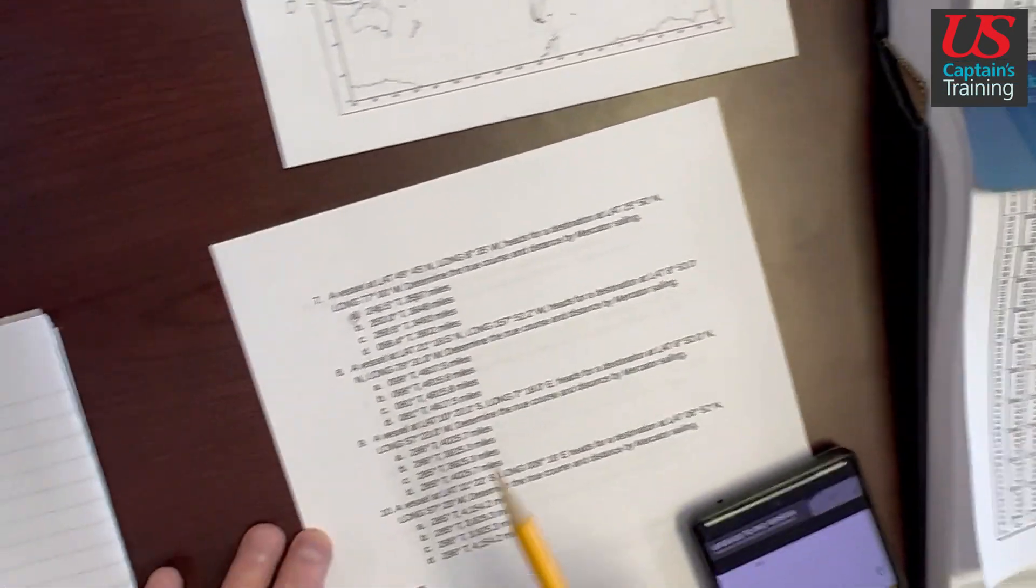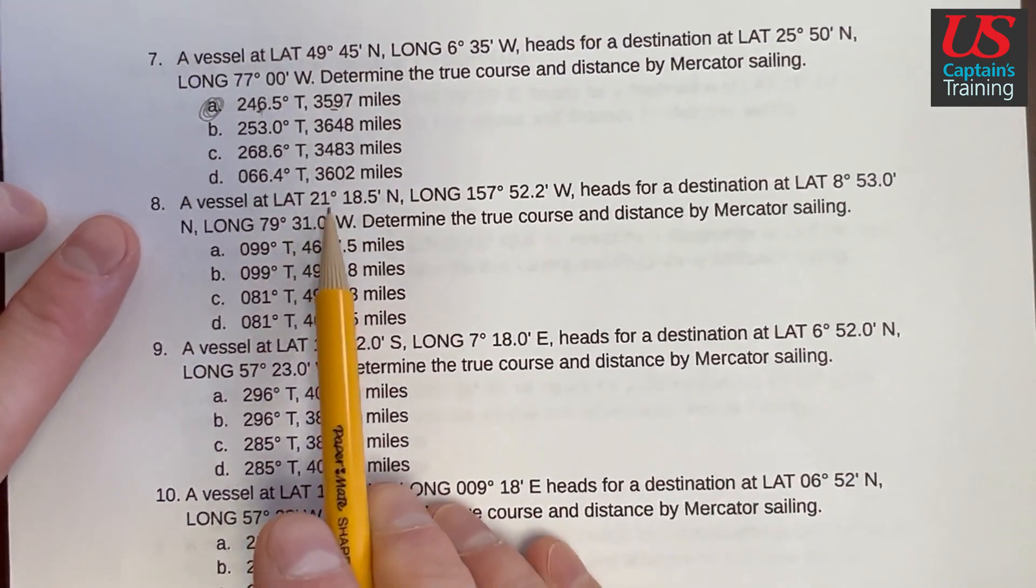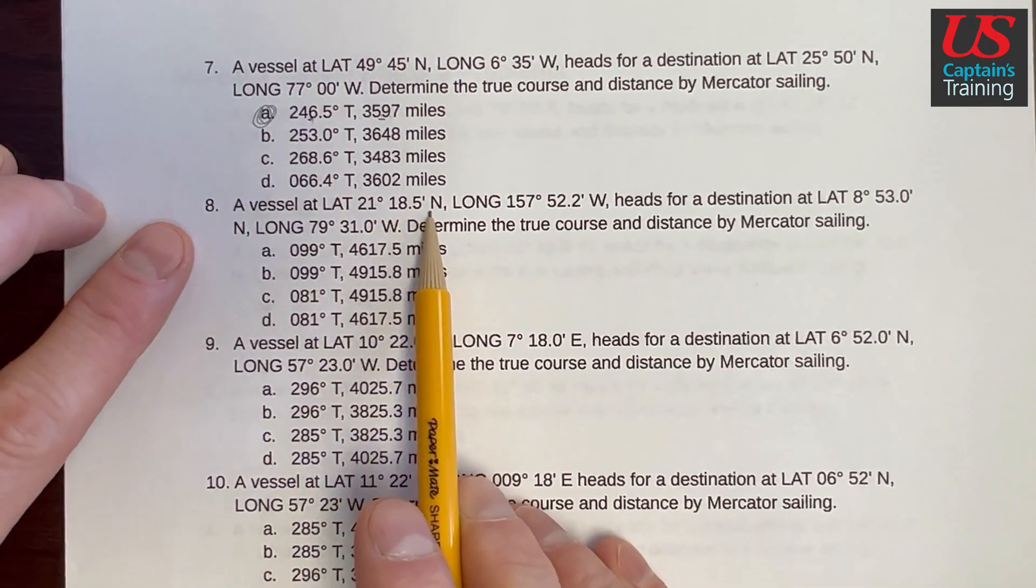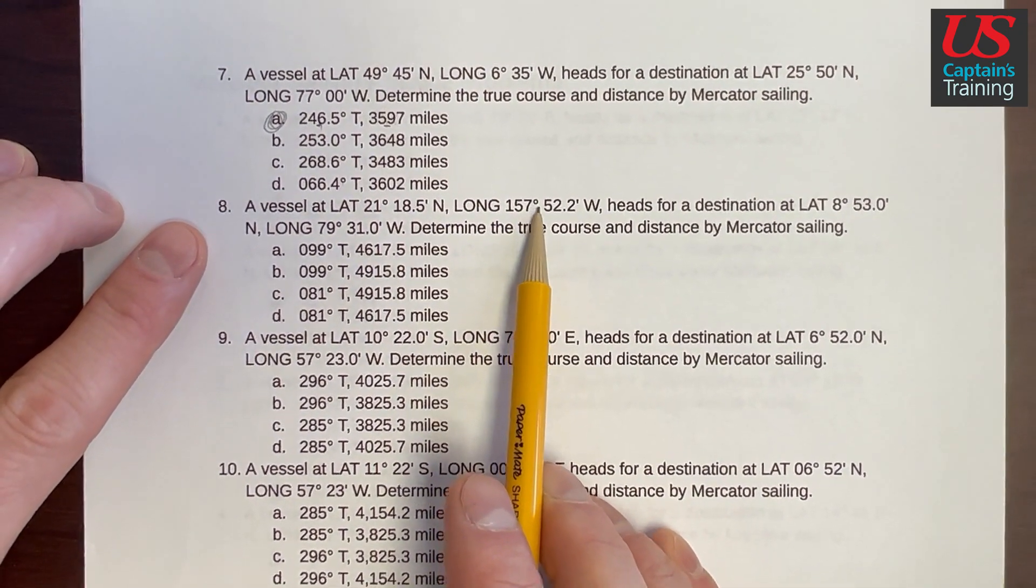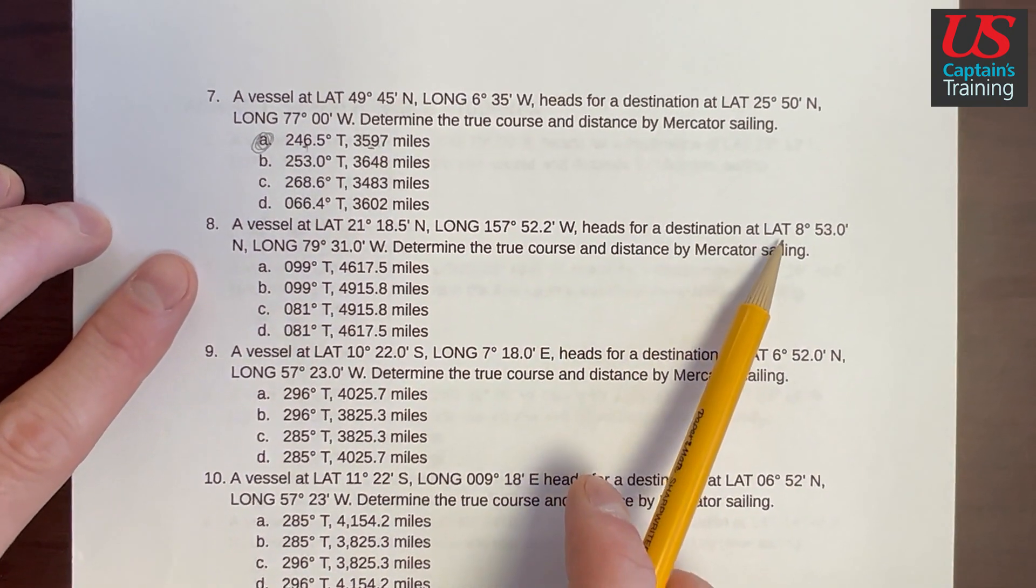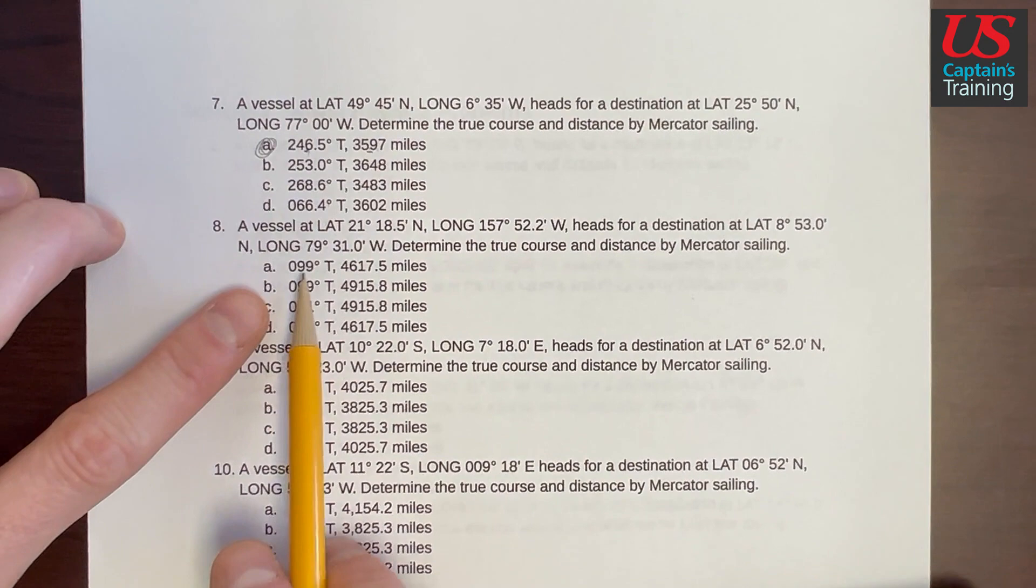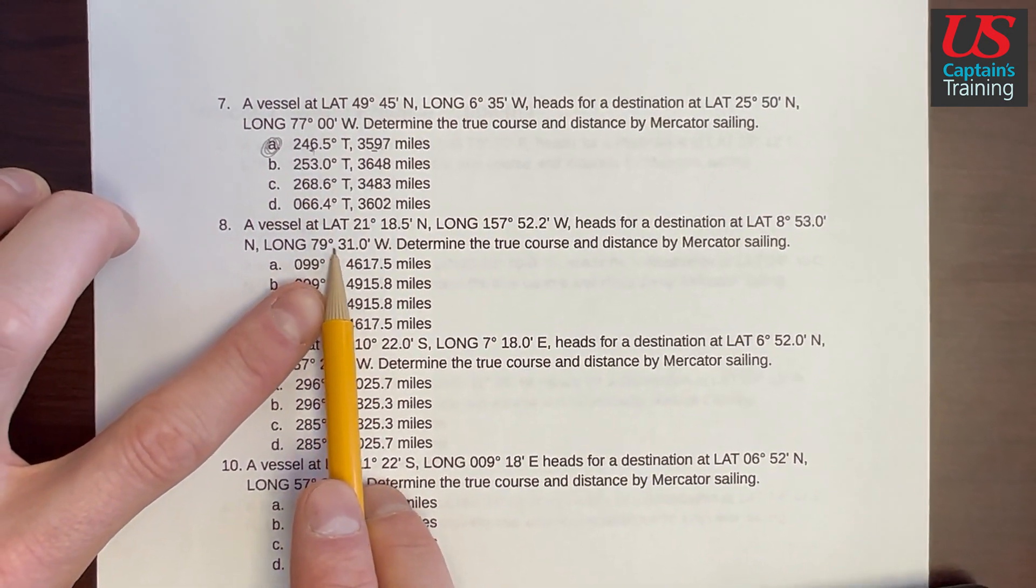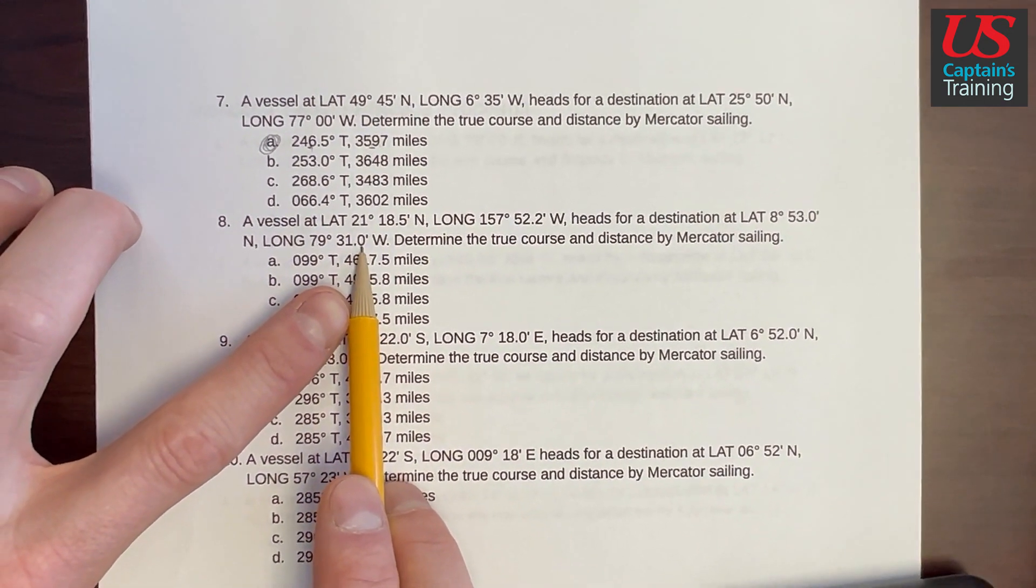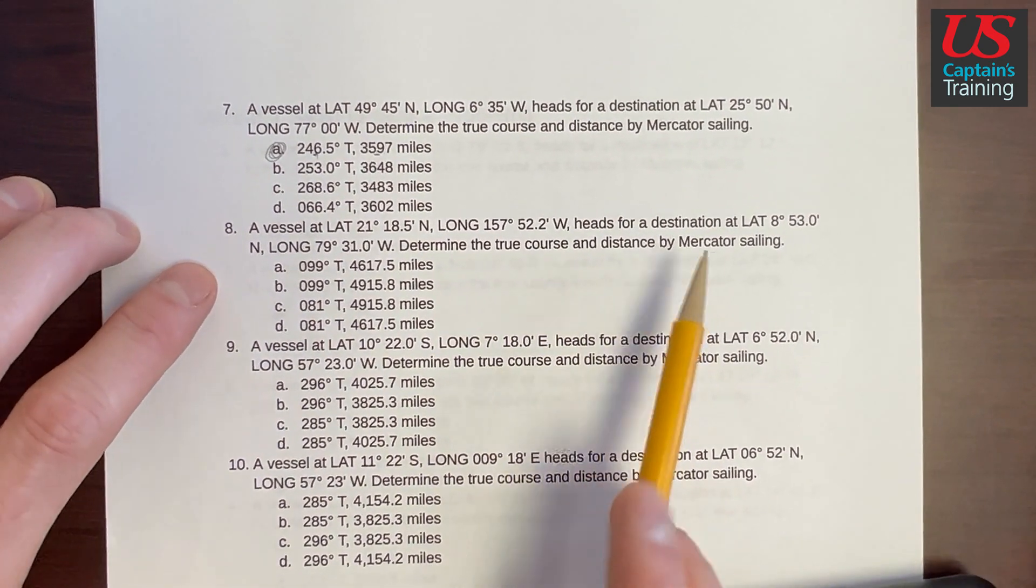Mercator Sailing practice problem eight. A vessel at latitude 21 degrees 18.5 minutes north, longitude 157 degrees 52.2 minutes west, heads for a destination at latitude 8 degrees 53.0 minutes north, longitude 79 degrees 31.0 minutes west. Determine the true course and the distance by Mercator Sailing.